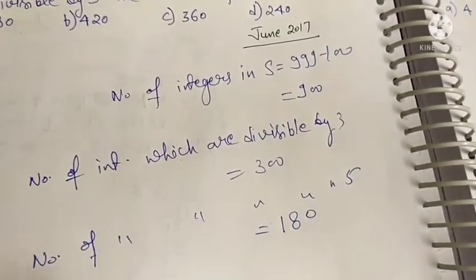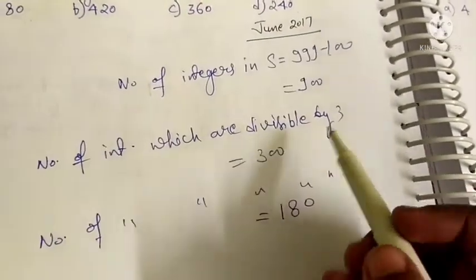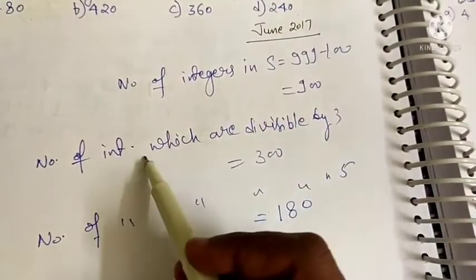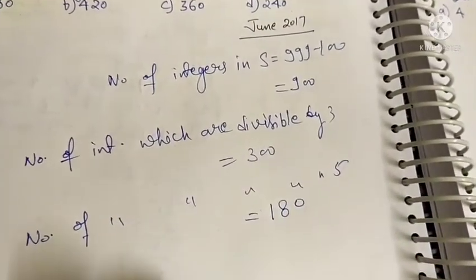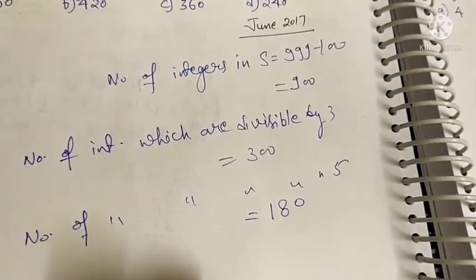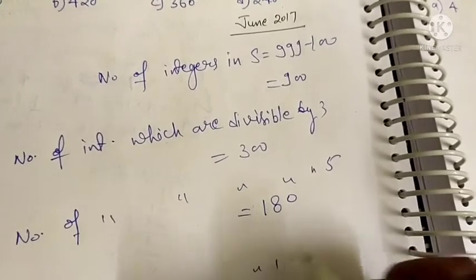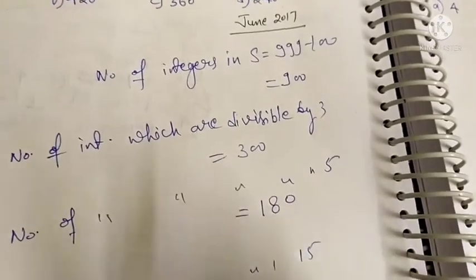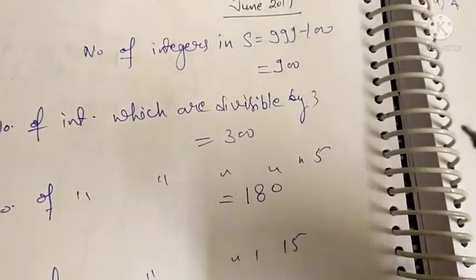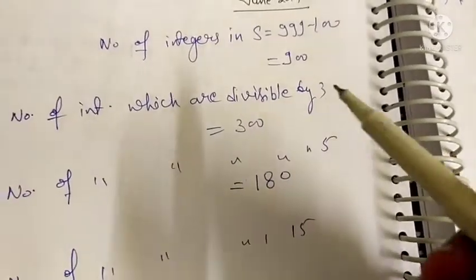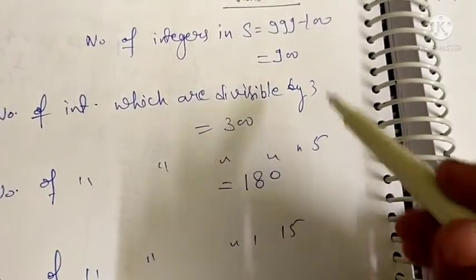Now, what is the number of integers which are divisible by both 3 and 5? That is the number of integers which are divisible by 15.